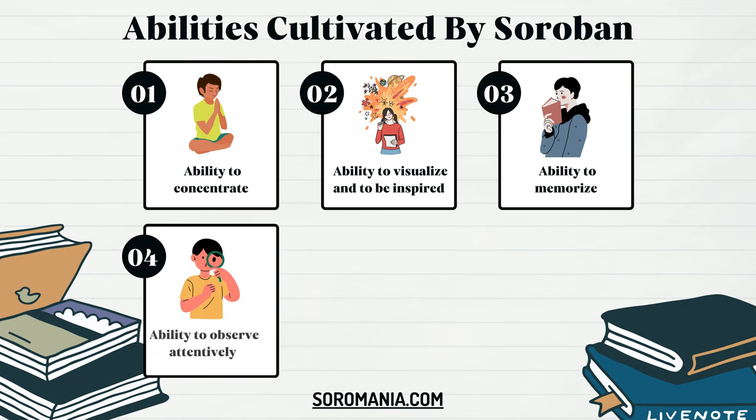The fourth ability is the ability to observe attentively — insight. The ability to observe attentively is greatly improved through Soroban training. You can learn to observe numbers attentively by training to carefully monitor them, with no mistakes excused. You are considered successful when you are able to discover the workings of numbers, and this practice leads to the ability to analyze various aspects with the use of numbers.